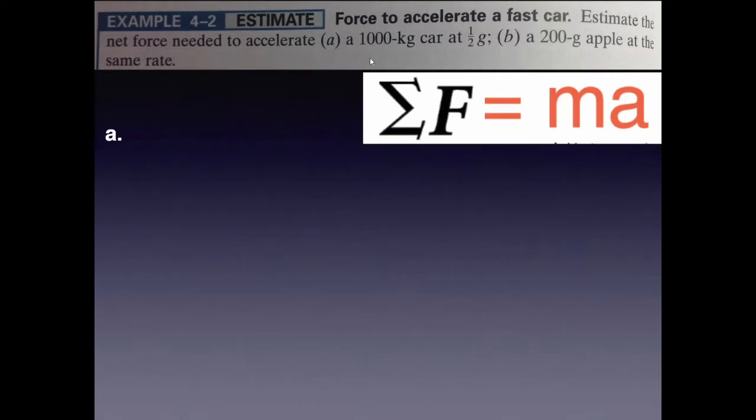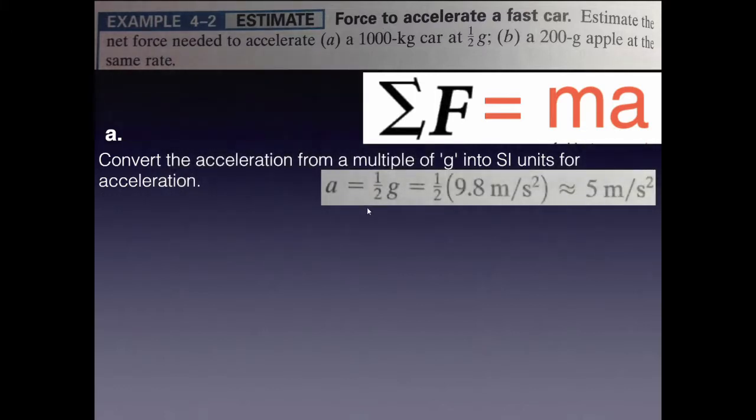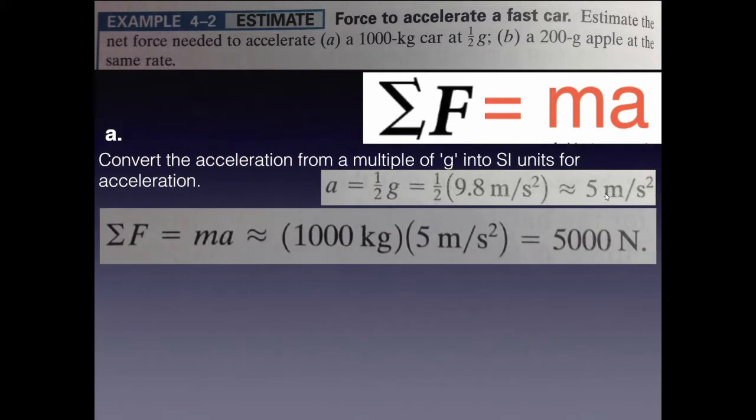So part A, we've got the 1,000-kilogram car. We've got the acceleration as well. So we have the M and the A. But 1 half G, what does that mean? Well, G is 9.8 meters per second squared, as we defined in previous chapters. So we have 1 half of that. Let's go ahead and find what that is. 1 half of 9.8 meters per second squared. It's approximately, so it's estimating, 5 meters per second squared. Remember, in estimating, we use 1 sig fig. That's a good ballpark.